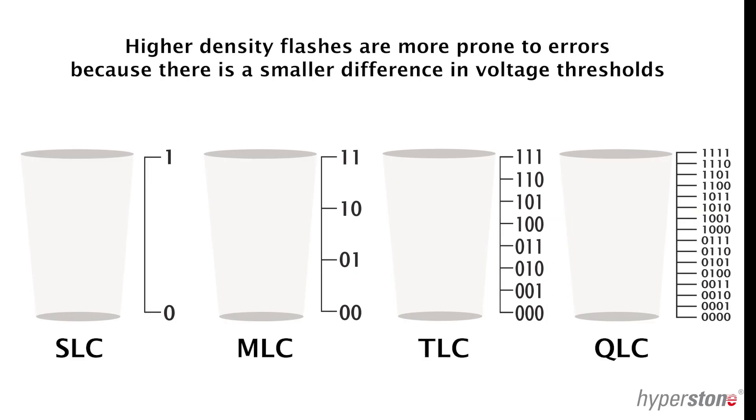But the problem is this: higher density flashes like TLC and QLC are more prone to errors. As you can see there is a smaller threshold difference between the on and off states of each bit. This makes them less reliable than SLC and MLC.